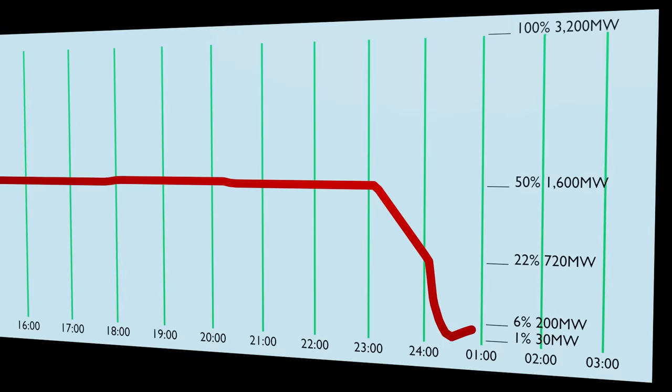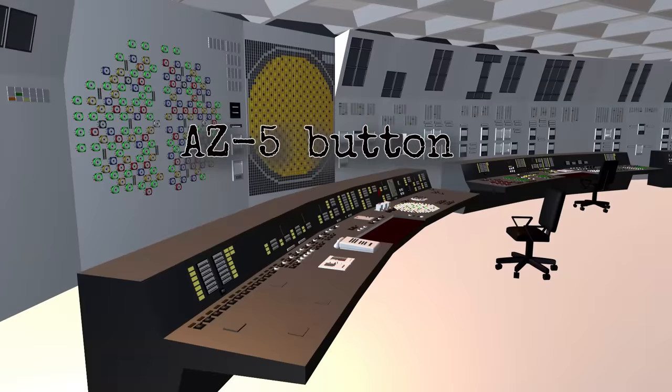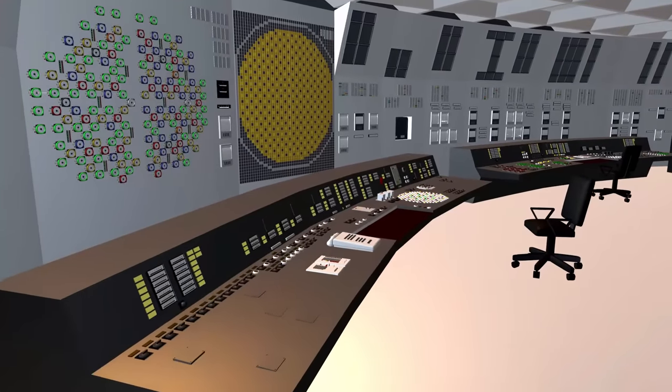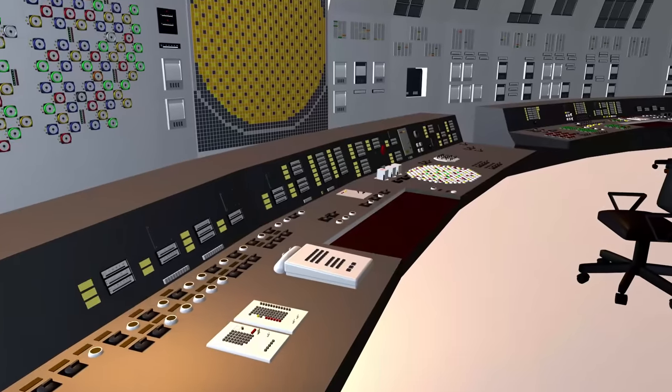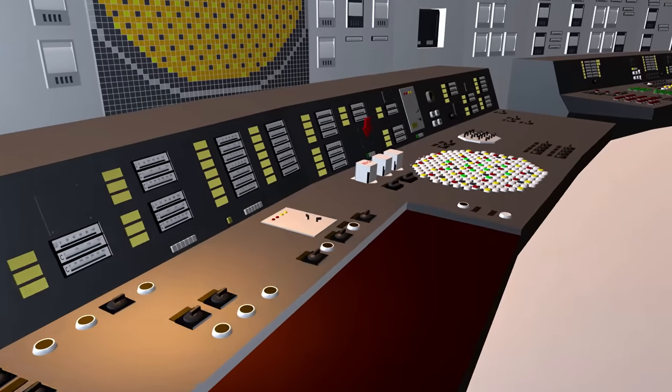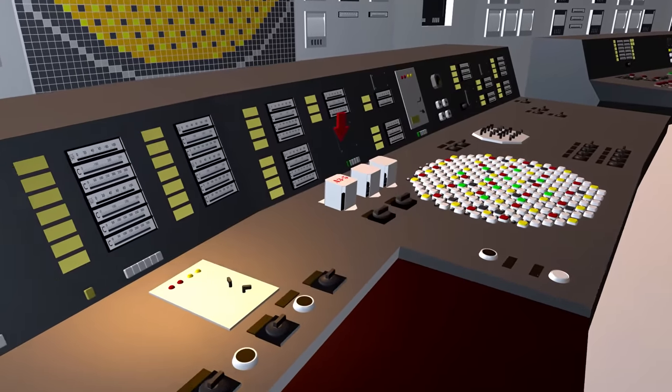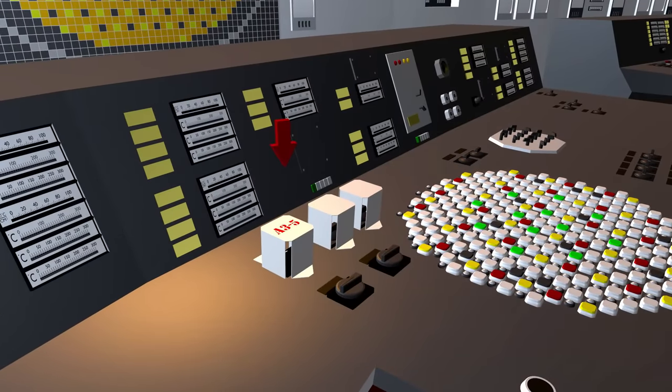One hour after the reactor stalled, the controllers had raised the power back up to six percent. The test was performed at 1:23 AM and lasted 40 seconds. The control staff had agreed beforehand upon completion of the test the AZ-5 button was to be pushed to complete the shutdown.